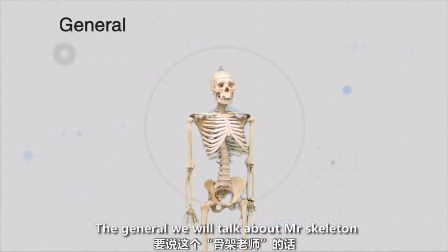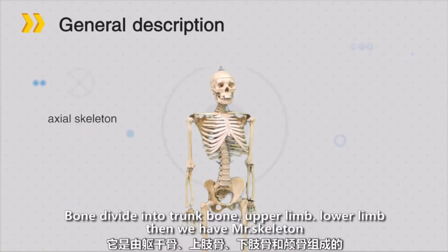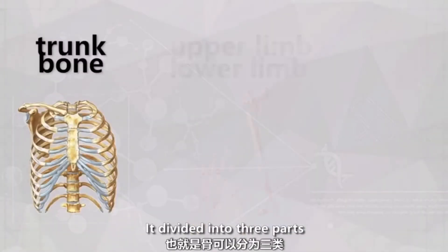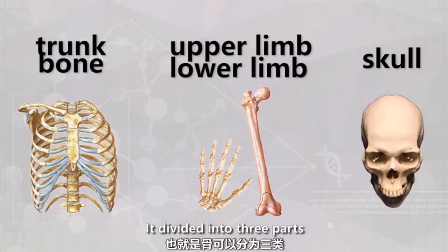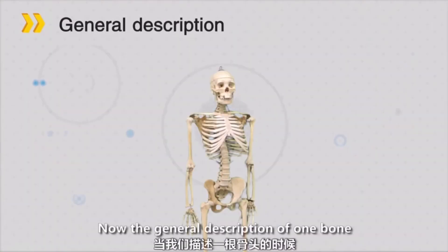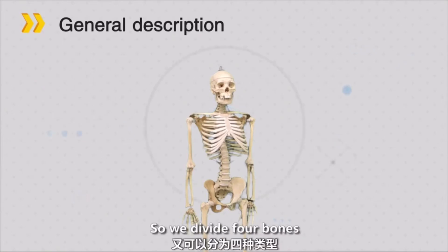Then we generally talk about osteology. All osteology is divided into the trunk, the upper limb, lower limb, and the skull — three parts. So we will clarify by looking at one bone. The general description of one bone: according to the bone shape, we divide bones into four types.